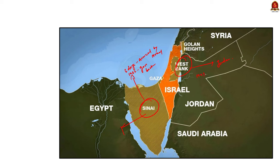In the 1947 war, the West Bank was annexed by Jordan. Then in 1967 it was captured by Israel, and at present Israel controls this region. The Gaza Strip was occupied by Egypt after the 1947 war, then again in the 1967 war it was taken back by Israel. At present this territory is under the control of Israel. The Gaza Strip is bordered by the Mediterranean Sea, Egypt and Israel.